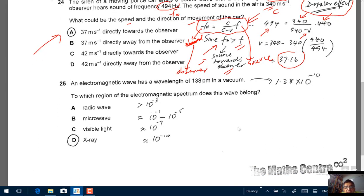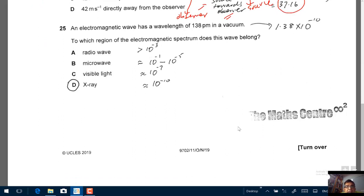Now let's move to 25. An electromagnetic wave has wavelength of 138 picometer. 138 picometer will be 138 times 10 to the power of minus 12 meter, which will be 1.38 times 10 to the power of minus 10 meter. To which region of the electromagnetic spectrum does this wave belong?